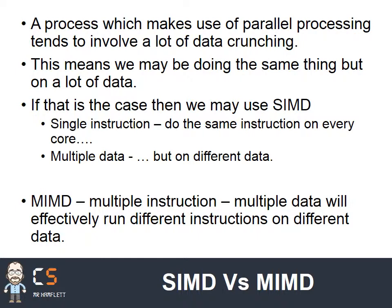It's also worth making a differentiation between SIMD and MIMD. A process which makes use of parallel processing tends to involve a lot of data crunching. With a single complex process — like 3D rendering where the data is each scene of the animation — I'm going to do the same instruction but on lots of different parts of data. So we most likely are going to be using SIMD: single instruction on every core but on different data. Multiple instruction multiple data, MIMD, is where I've got different instructions running on different data — this is more the hallmark of having different processes all doing different things running on different cores.